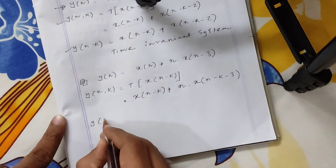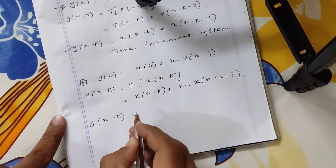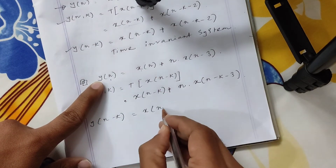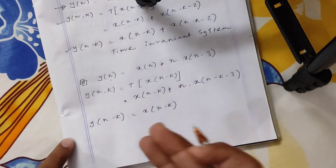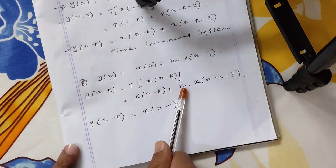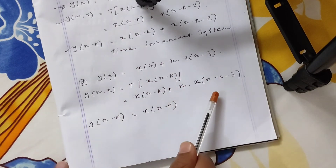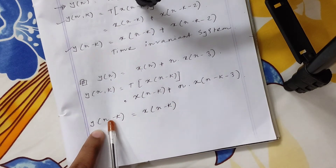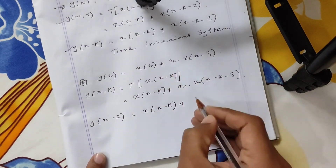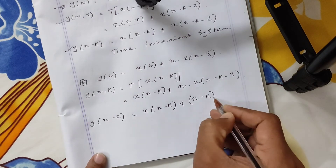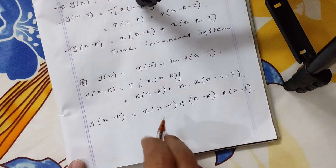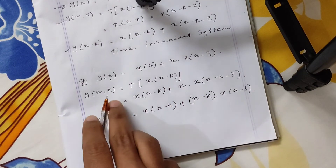Then we compute y[n-k]. y[n-k] equals x[n-k]. Here every n is replaced by n minus k. So it becomes x[n-k] plus n minus k, into x[n-k-3]. We can see this one and this one are not equal.